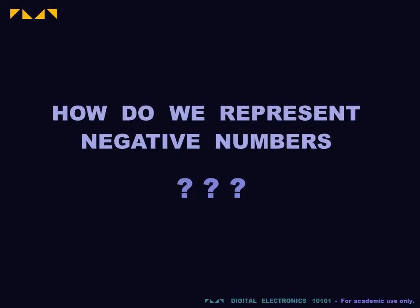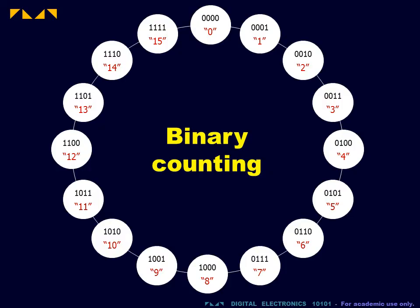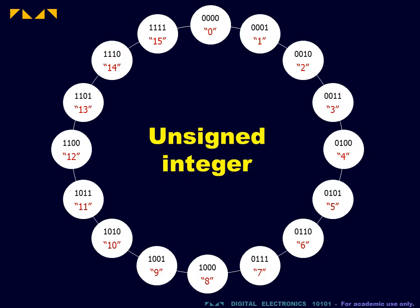We now consider how to represent negative numbers using binary coding. In the previous video, we considered the representation of numbers using a binary counting code. This system is more formally known as the unsigned integer representation, since it represents the set of integers starting at zero.